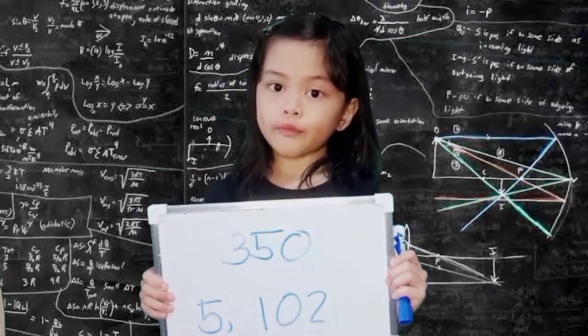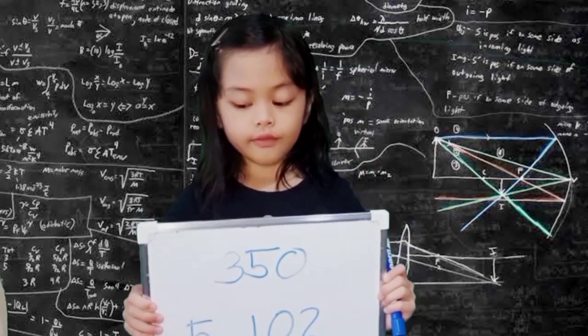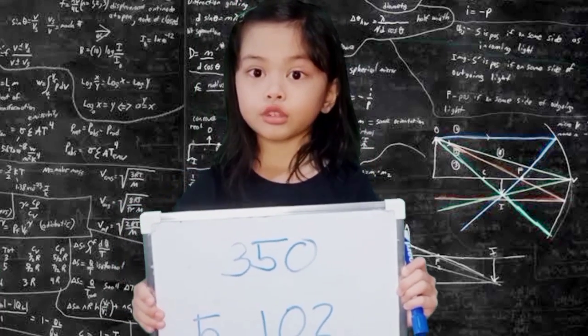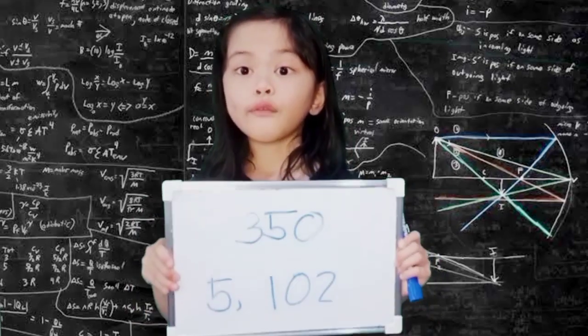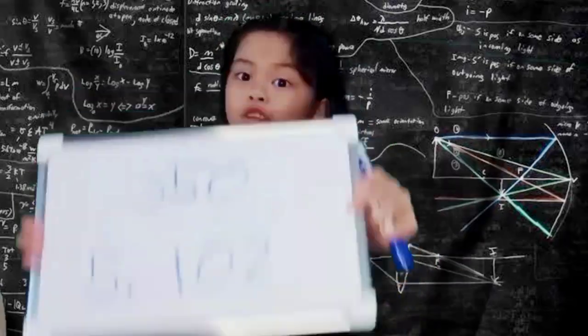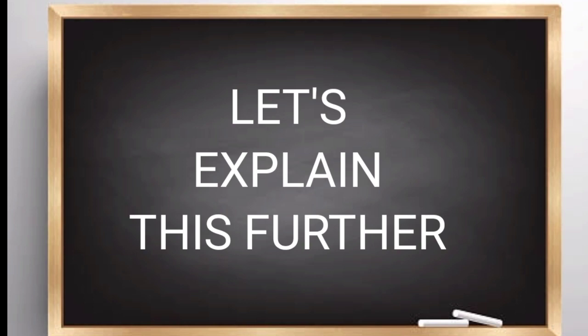For example, the number 355 is the tens, but in 5,102, five is thousands. Just take a look! Let's explain this further.